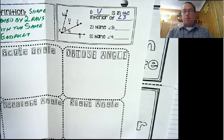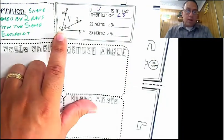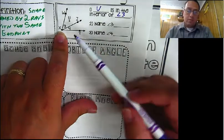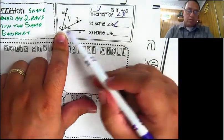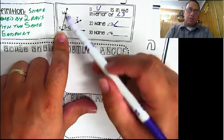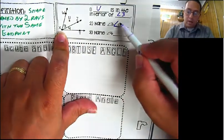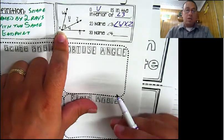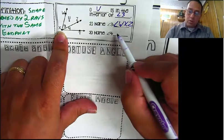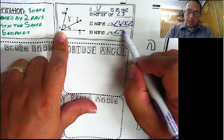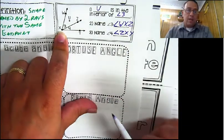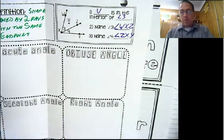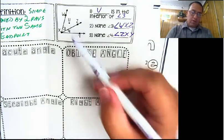It wants a name for angle 3 other than 'angle 3.' Could we call it angle X? No - there are too many angle X's here. So we call it angle ZXW or WXZ. Either way is good, as long as you have a point on one side, the vertex, and a point on the other side. The name for angle 4: you could call it angle ZXY or YXZ. You cannot call it angle Z because there are actually three angles here - angles 3, 4, and WXY.